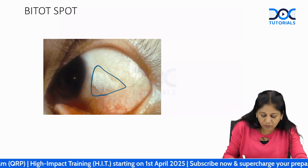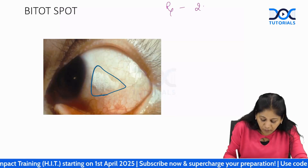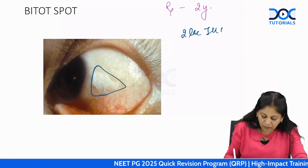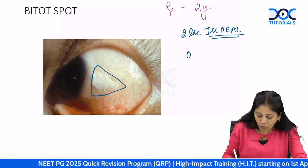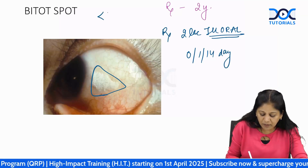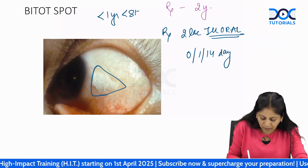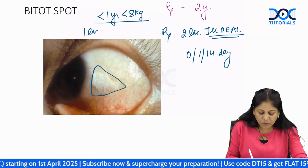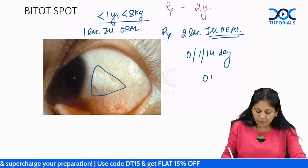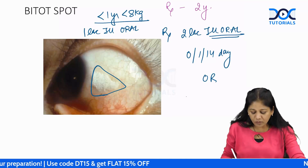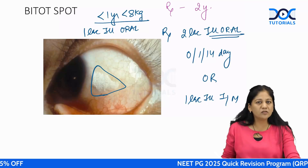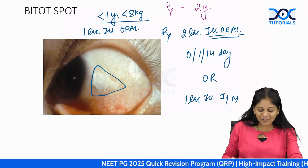To treat a child over one year with Bitot's spot: give 2 lakh international units orally on days 0, 1, and 14. If the baby is less than one year or less than 8 kg, give half the dose — 1 lakh international units orally on the same days. If the baby cannot tolerate oral doses, give half the dose intramuscularly on days 0, 1, and 14.